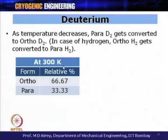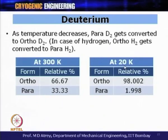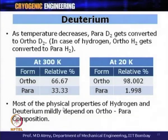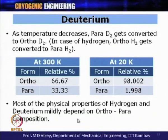For deuterium, normal composition at 300 Kelvin is 66.67% ortho and 33.33% para. Unlike hydrogen (where ortho converts to para on cooling), for deuterium the para D₂ gets converted to ortho D₂ as temperature decreases. At 20 Kelvin, deuterium is approximately 98% ortho and 1.998% para — the opposite trend from hydrogen. Most physical properties of hydrogen and deuterium depend only mildly on ortho/para composition.